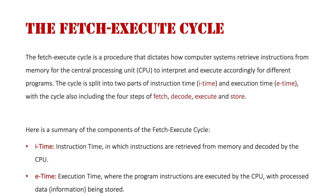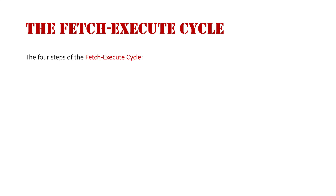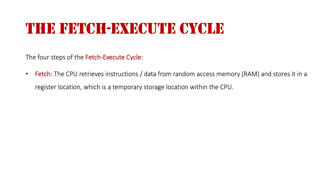Now we'll look into how these two phases are broken into those four steps. Here are the four steps of the fetch-execute cycle. We have fetch, where the CPU retrieves the instructions from random access memory and then stores them in a register location, which is a temporary storage location in the CPU for processing.